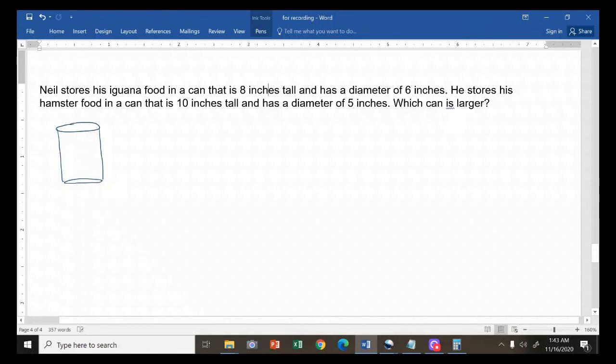First, let's compute the volume of the first can. This is where he stores the iguana food. It has a height of 8 inches and then it has a diameter of 6 inches. Since our diameter is 6 inches, that means our radius is—we just divide it by 2—3 inches.